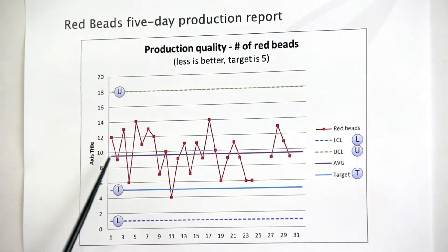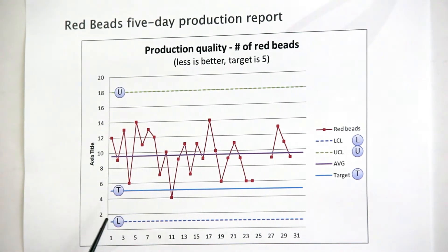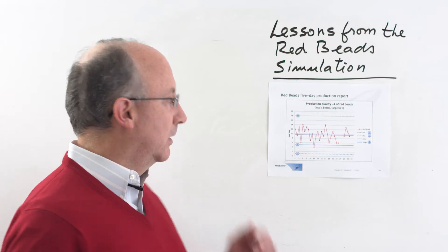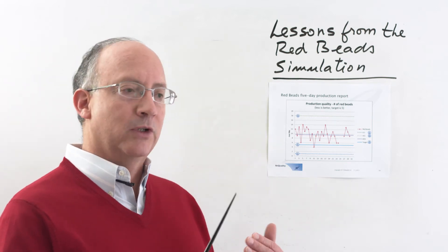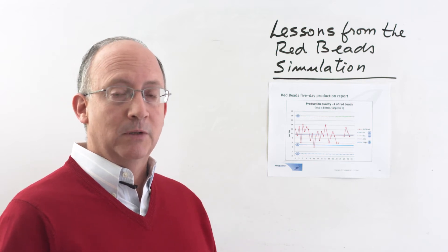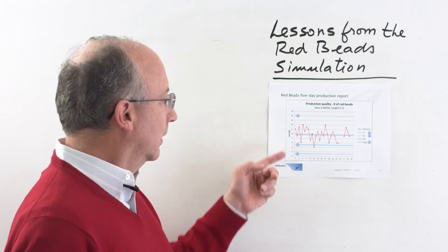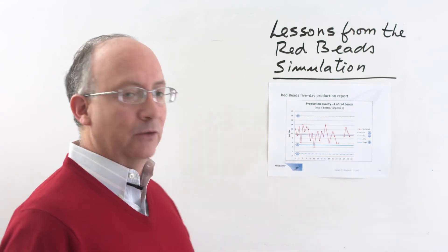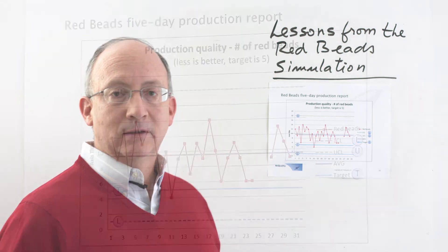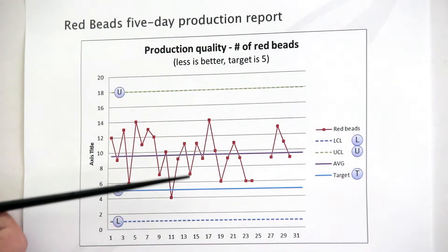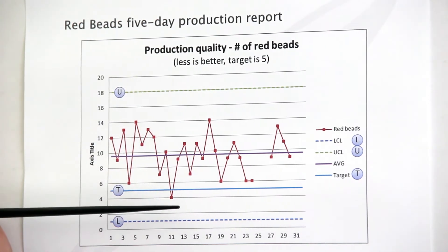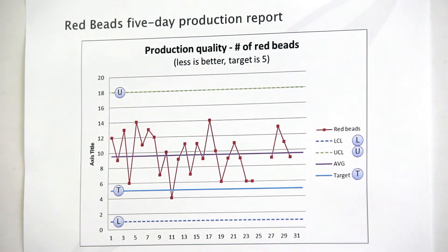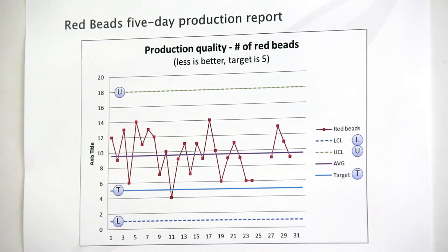What these two lines represent, the upper and the lower control limit, is something known as a range of natural variation. That means that the way in which the numbers are coming out of the system of the experiment indicates that the production could go as high as about 18 and as low as about 1 red beat. And so this range is a range where the number of Red Beats are pretty much expected. And all the variation that we see here is actually due to the system of production, as I'm going to explain also in the next lesson.